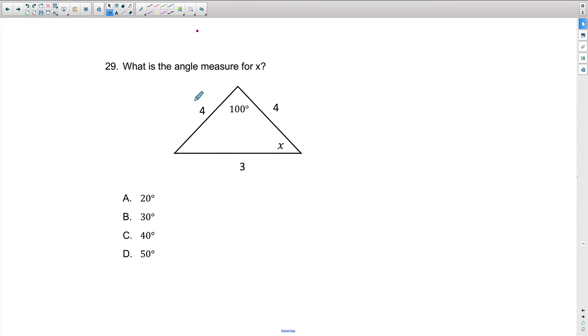Let's take a look at another way in which you'll have to deal with triangles on the GKT, the 6-12 and the 5-9 math. You may be given a triangle with some information and some missing information. Right now, they're asking us, what is the angle measure for x? Here I have 100 degrees, and I have a 4, a 4, and a 3.